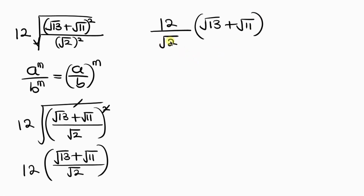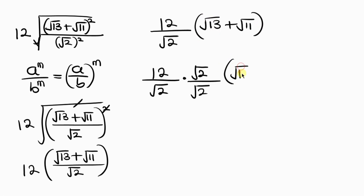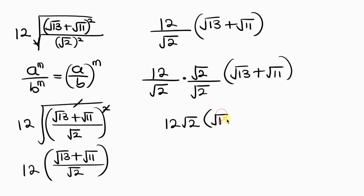Since I have a square root on the denominator, I should rationalize it. Rationalizing means I multiply the numerator by the square root of 2 and also multiply the denominator by the square root of 2, then times the expression: square root of 13 plus the square root of 11. This gives 12 root 2 times the square root of 13 plus the square root of 11, all over the square root of 2 times the square root of 2.